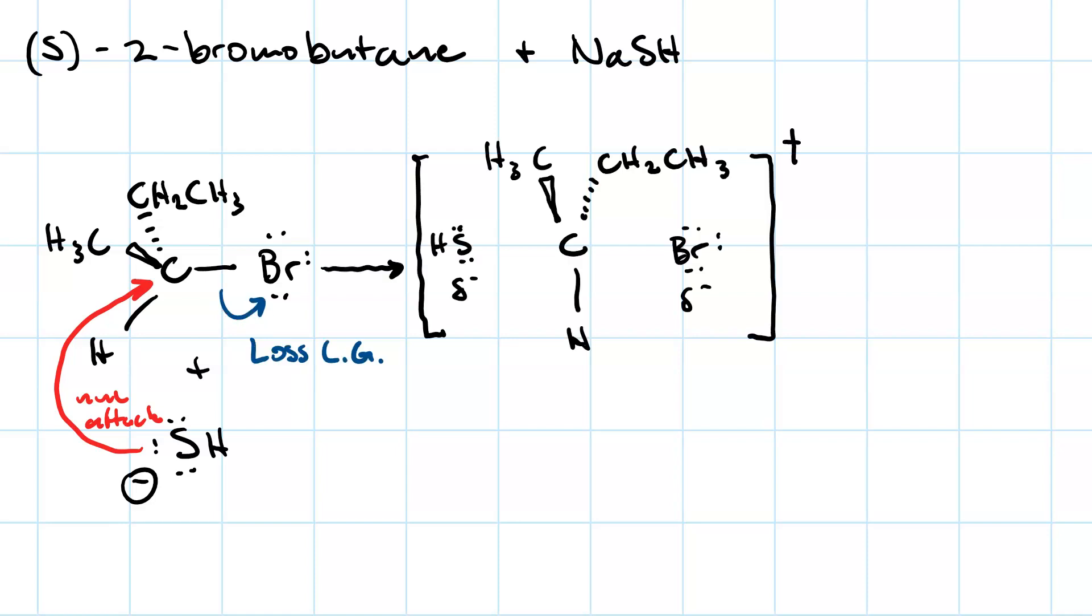Here's the transition state that's forming, and the nucleophilic attack gives you this bond, which is in the process of forming between the sulfhydride and the central carbon. I should point out that this central carbon is a lot like a secondary carbocation, in that the hydrogen, the methyl group, and the ethyl group are all in the same plane in the transition state.